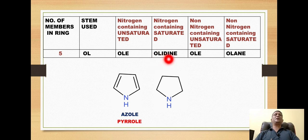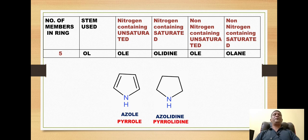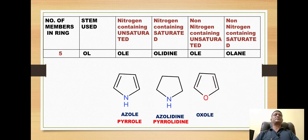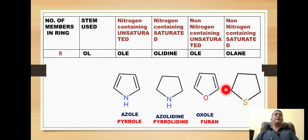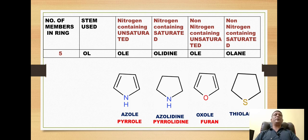For a completely saturated five-membered nitrogen ring, we use the suffix 'olidine', giving the name 'azolidine', which is commonly called pyrrolidine. For non-nitrogen five-membered rings, we use the suffix 'ole' if unsaturated — for example, 'oxole', commonly called furan. For a completely saturated non-nitrogen five-membered ring, we use the suffix 'olane', giving 'thiolane' for a sulfur-containing ring, commonly called tetrahydrothiophene.